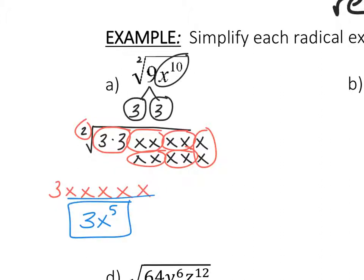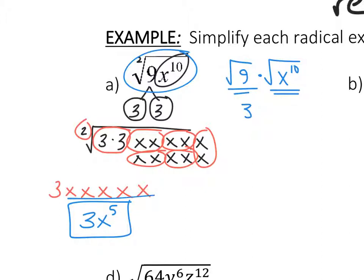Another way you can do this: it means the square root of 9 times the square root of x to the 10th. The square root of 9 is 3. And the square root of x to the 10th — how many groups of 2 do you have in 10? You're really doing 10 divided by 2 because it's a square root, so that's how you get x to the 5th. There are a couple of different ways to approach this.